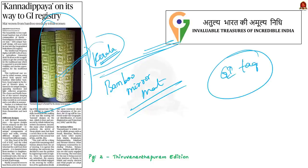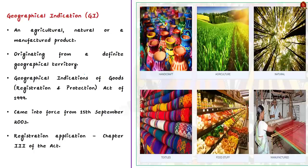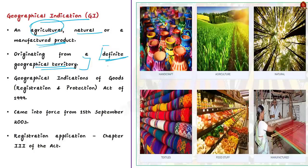A geographical indication or GI is primarily an agricultural product, natural product, or a manufactured product that originates from a different geographical territory. Manufactured products here refer to handicrafts and industrial goods. The important point is these products originate from a specific geographical territory. There are six categories under which GI tags are assigned to such products.